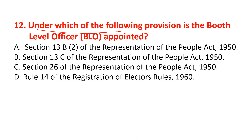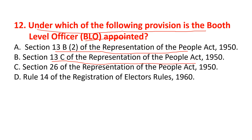Under which provision is the Booth Level Officer appointed? Options include Section 13B(2) of the Representation of the People Act 1950, Section 13C of the Representation of the People Act 1950, and Rule 14 of the Registration of Electors Rules 1960. The correct option is Section 13B(2) of the Representation of the People Act 1950.